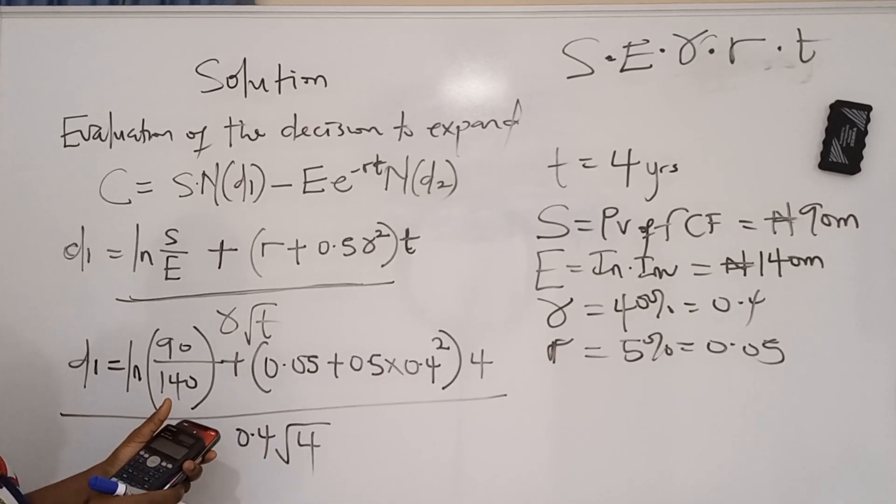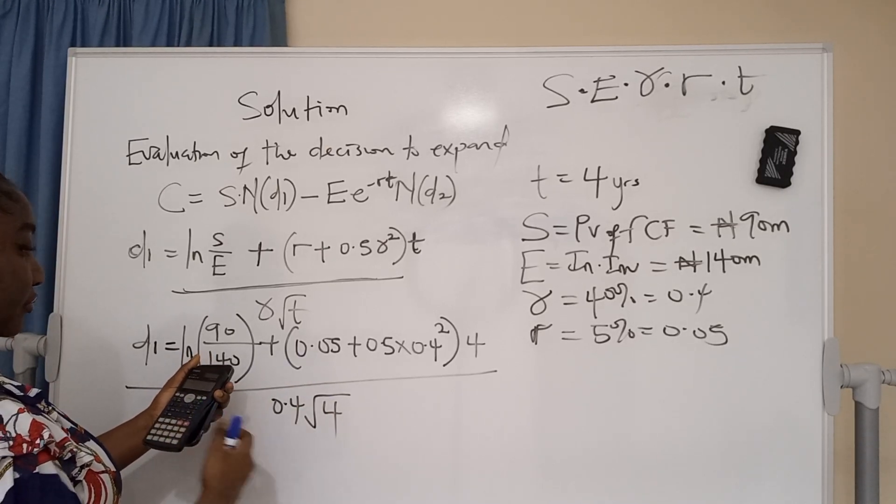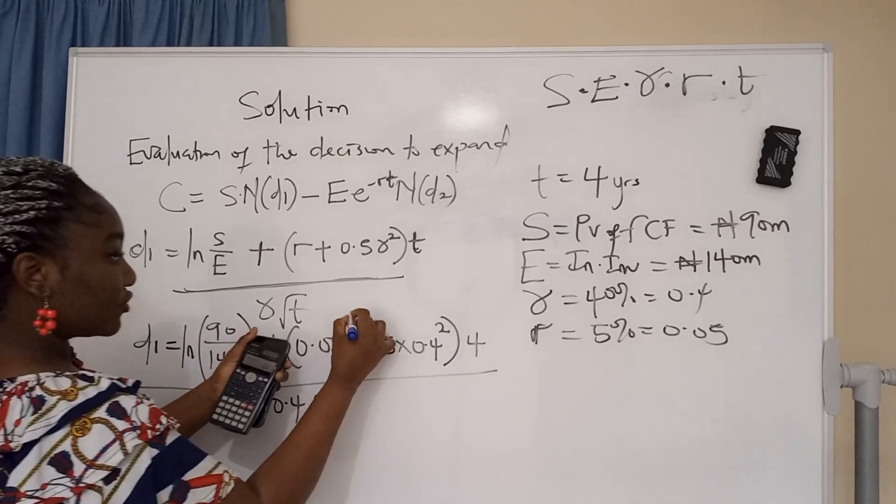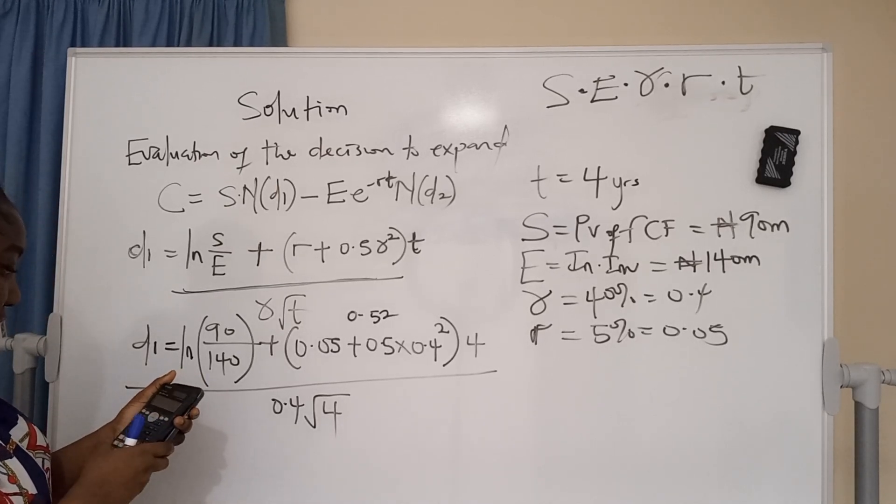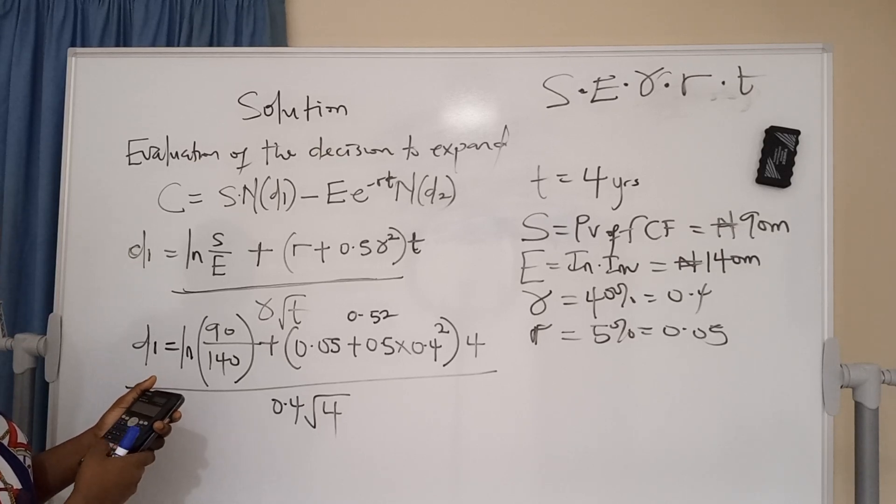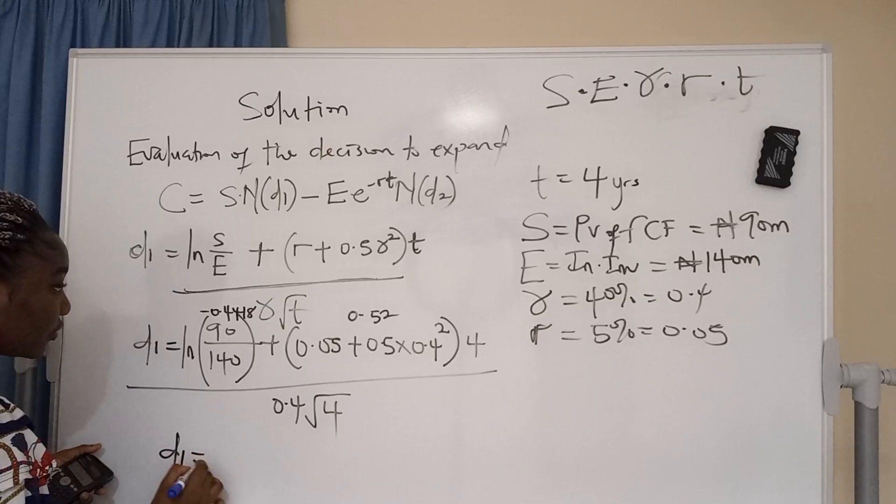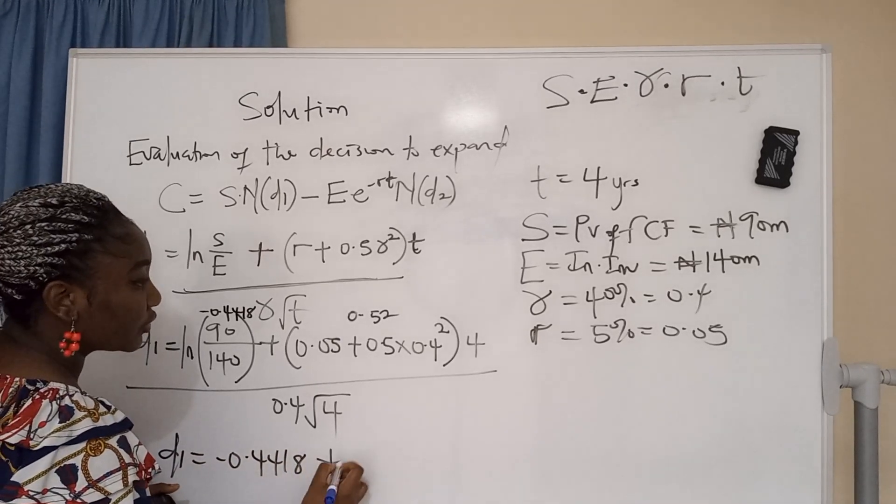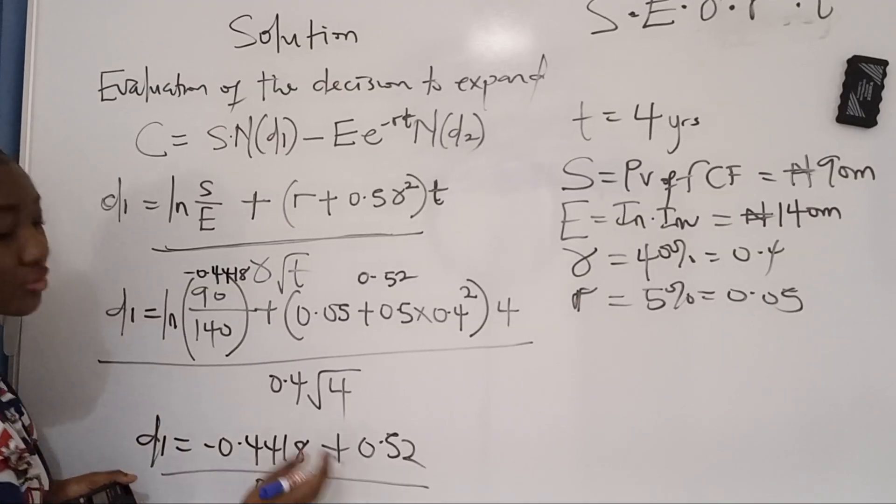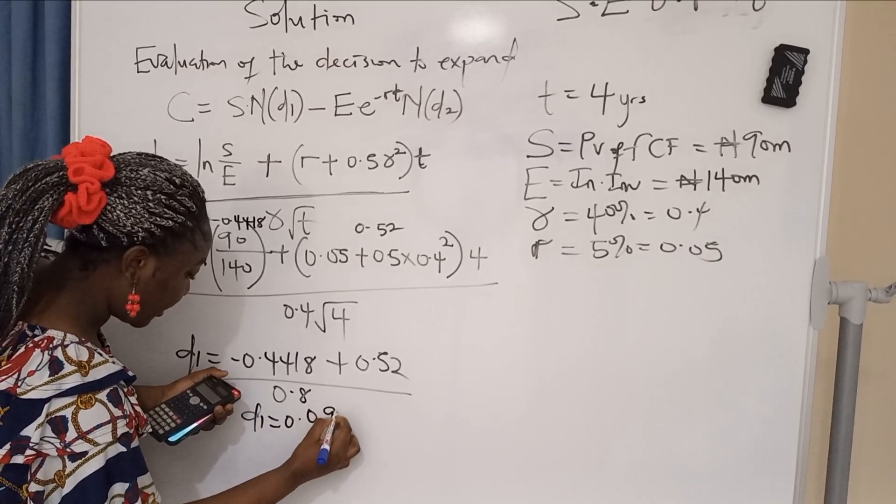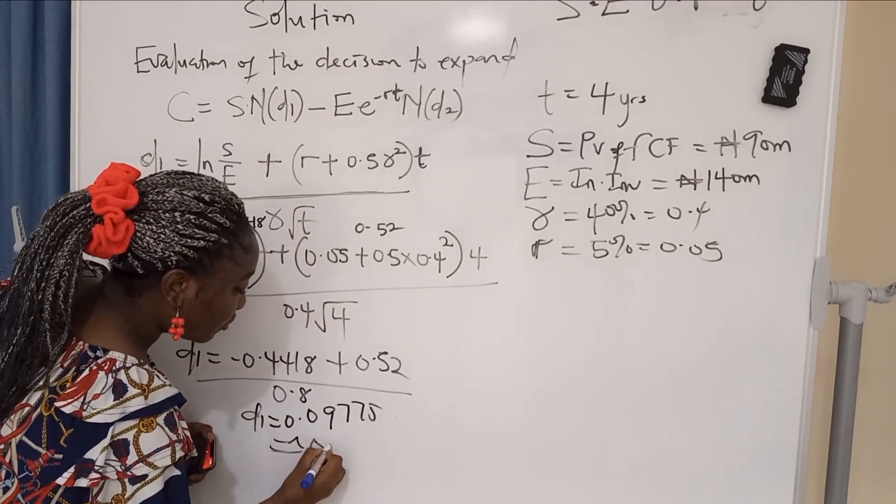Start from here: 0.4 squared times 0.5 plus 0.05 times 4. So you already have the result of this place at 0.52. Then 90 divided by 140, the natural log of it - natural log 90 divided by 140. Answer: minus 0.4418. D1 equals minus 0.4418 plus 0.52 divided by 0.4 root 4, which is 0.8. Put all this in your calculator and you get your D1 to be 0.09775, which should be approximately 0.0978.